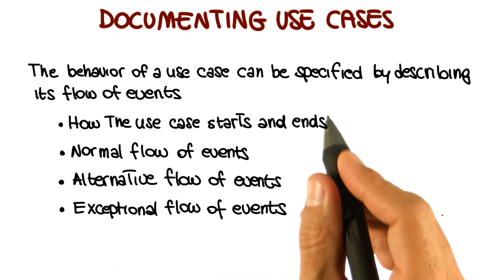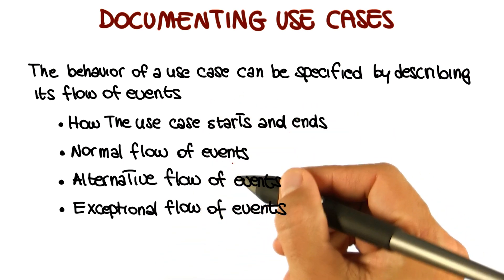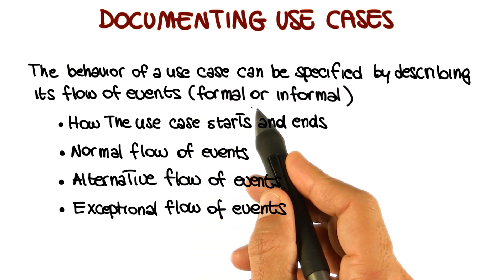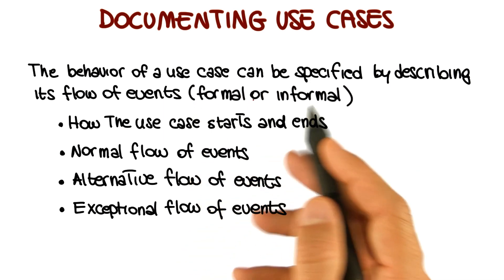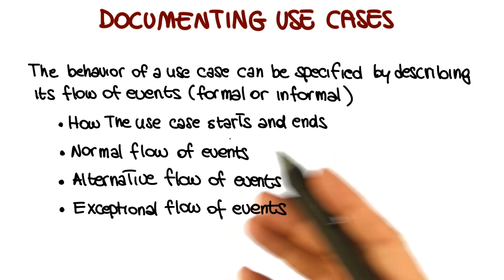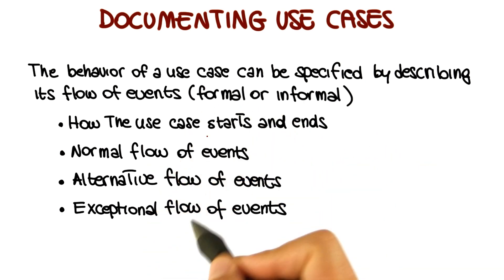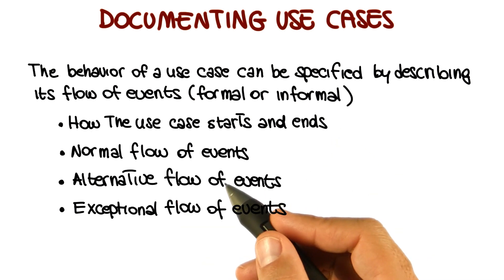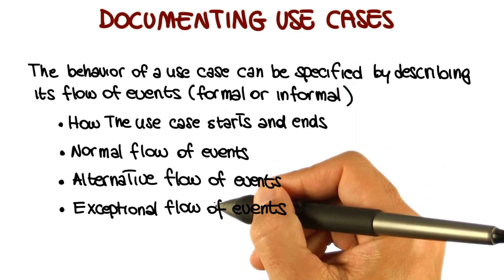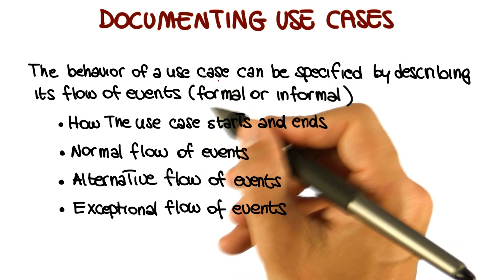One more thing when documenting use cases: this information can be provided in two main ways — informally or formally. In an informal description, we have a textual description of the flow of events in natural language. In a formal structured description, we might use pre and post conditions, pseudocode to indicate the steps, or sequence diagrams, which is something we will see in a moment.